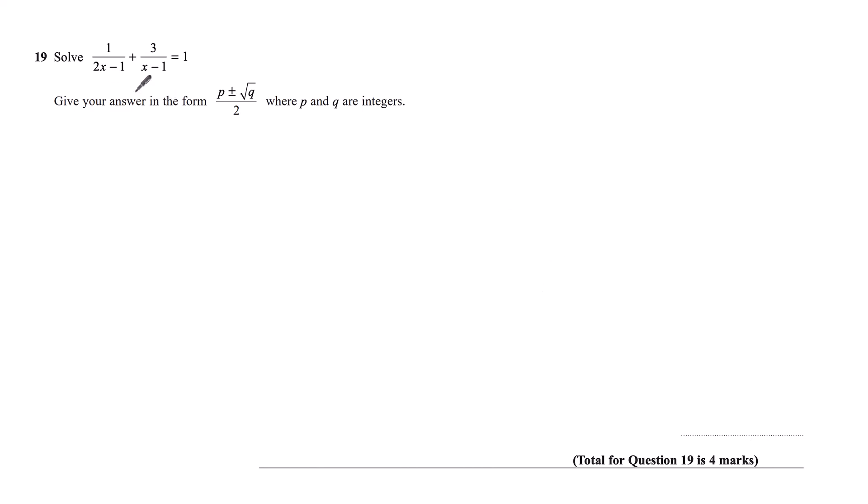Question 19. Solve 1 over 2x minus 1 plus 3 over x minus 1 equals 1. Give your answer in the form p plus or minus root q over 2, where p and q are integers.